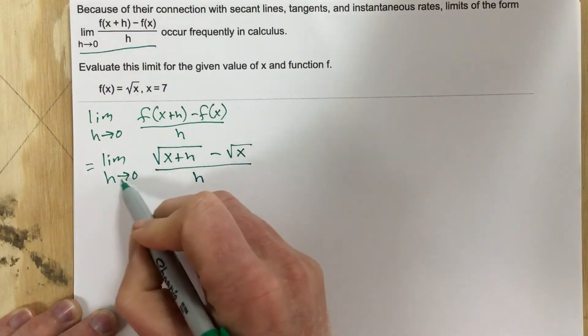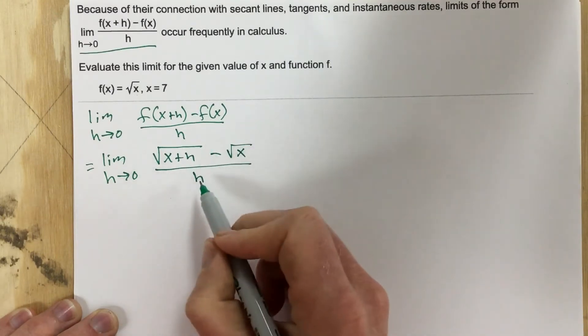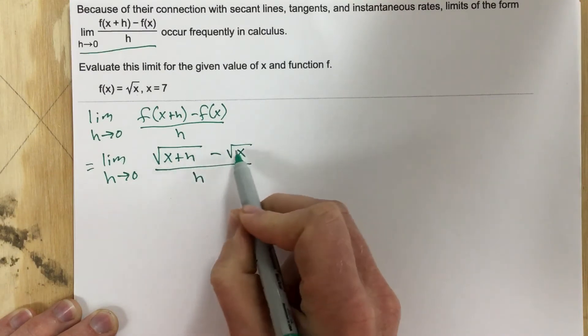Now again, I can't plug in this 0 straight away in here because I get division by 0. So what I have to do is I have to essentially cancel out this h somehow. Well, I can't do it right now because of the roots.